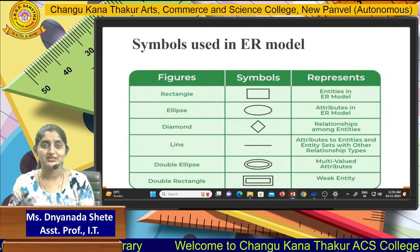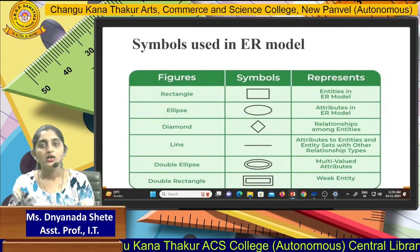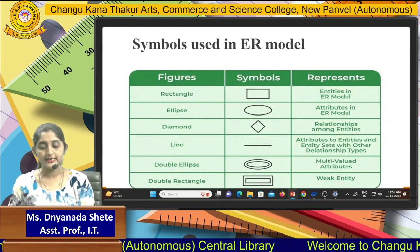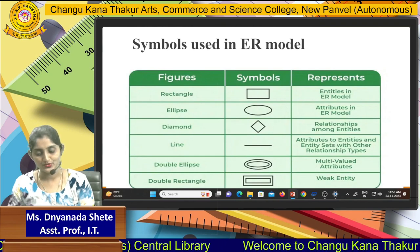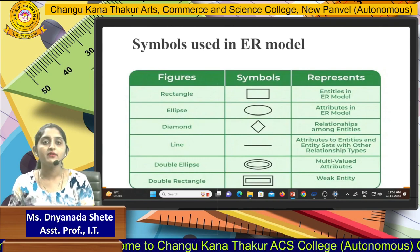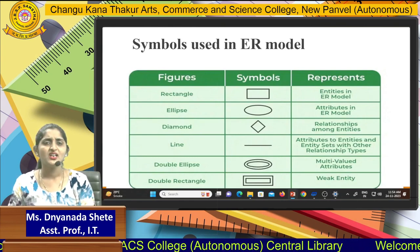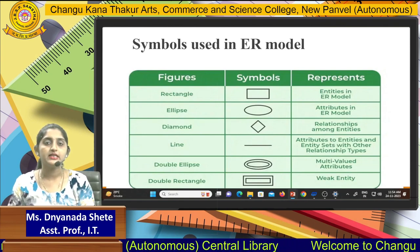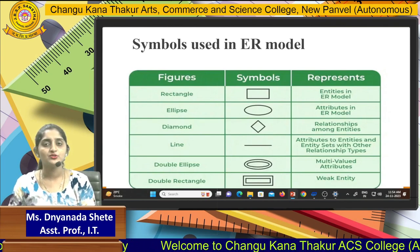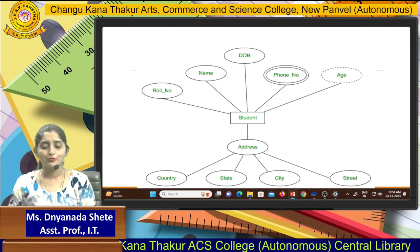The diamond box is always used to represent the relationship among entities — many-to-many, one-to-many, and one-to-one relationships are always represented by a diamond symbol. A line will always connect the attribute to the entity and provide connectivity between entity sets and other relationship types. Double ellipse means multi-valued attributes, and double rectangle means weak entity — if you want a weak entity, it will use the double rectangle symbol.